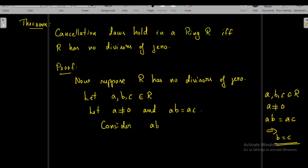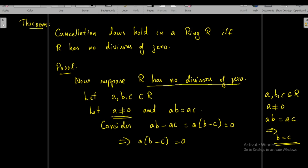Consider the expression AB − AC. Since multiplication is distributive over addition in a ring, this can be written as A·(B − C). Since AB = AC, we have AB − AC = 0, so A·(B − C) = 0. Since A ≠ 0 and R has no divisors of zero, the product of two elements equaling zero means one must be zero. Therefore B − C = 0, which means B = C.